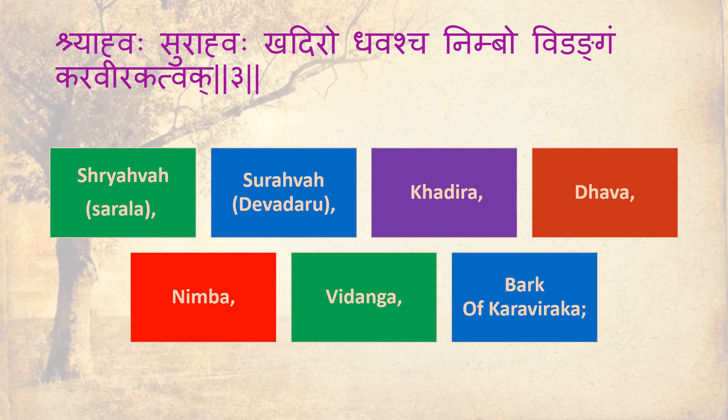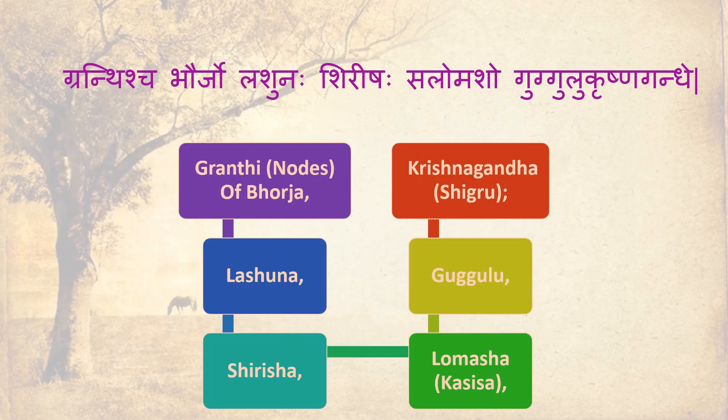Srayahvaha, Surahvaha, Kadira, Davashj, Mimpo, Vyadangam, Karavira, Tuk, Grendish, Baurjho, Lashunah, Shirishah, Salomash, Gugulu, Krishna Ghandhi Grendi — also listed as Burj, Lashuna, Shirisha, Lomash, Orkasi, Kugulu, Krishna Ghandha, Orkashikru.